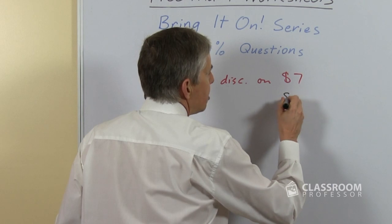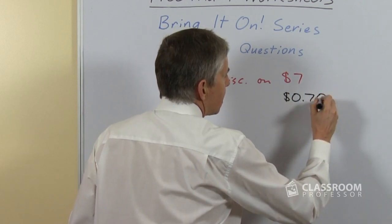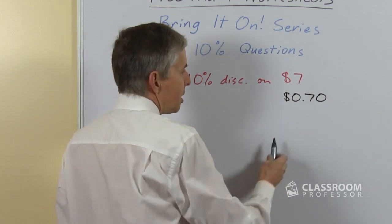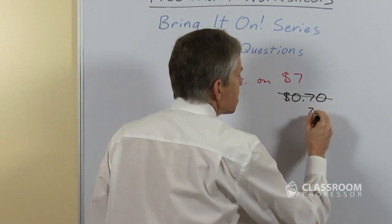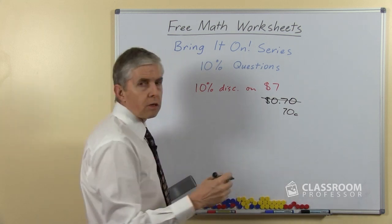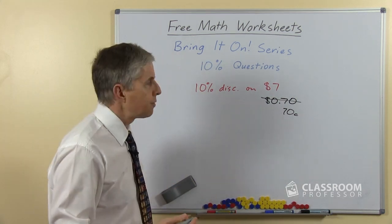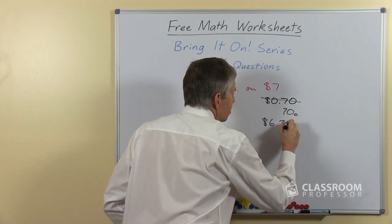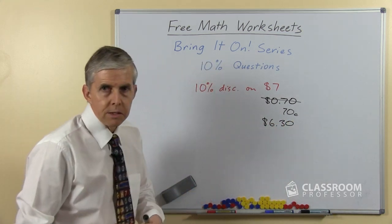So again if the student needed to write it down we could help them see that that's $0.70, the seven moves into the tenths column in dollars or alternatively of course they could see it not as dollars but as cents, either way is fine and then do the subtraction, again if possible do it mentally and get the answer $6.30.